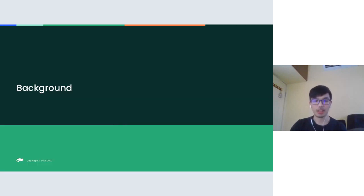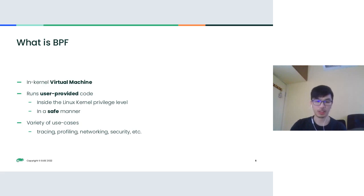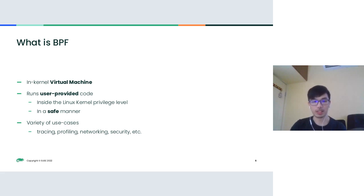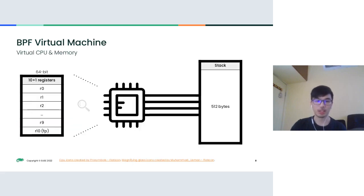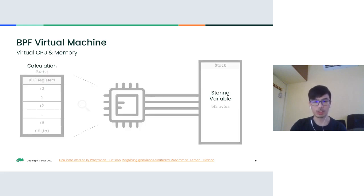Let's begin with some background on BPF. BPF is an in-kernel virtual machine and it runs user-provided code, which usually sounds like a bad idea — but the good thing is that we can run BPF code in a relatively safe manner. Because of this, BPF has a lot of use cases: tracing and profiling, networking, and security. The in-kernel virtual machine has a virtual CPU and some memory. The virtual CPU has registers used for calculations, and there is a 512-byte stack for storing variables.